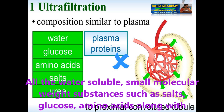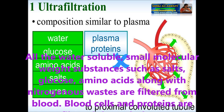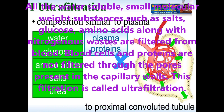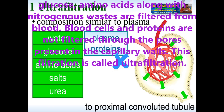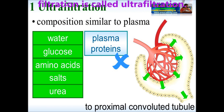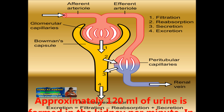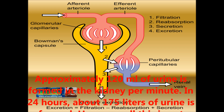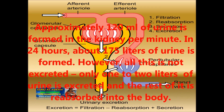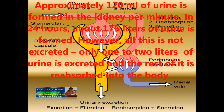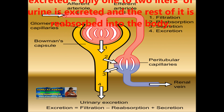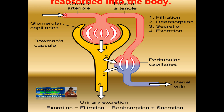All the water-soluble, small molecular weight substances such as salts, glucose, and amino acids, along with nitrogenous waste, are filtered from the blood. Blood cells and proteins are not filtered through the pores present in the capillary walls. This filtration is called ultrafiltration. Approximately 120 ml of filtrate is formed in the kidney per minute. In 24 hours, about 175 liters of filtrate is formed in our kidneys. However, all of this is not excreted — only 1 to 2 liters of urine is excreted and the rest is reabsorbed into the body.